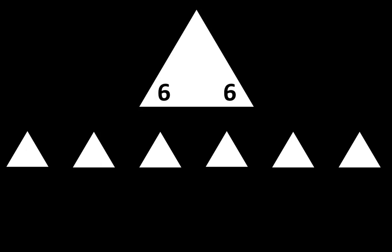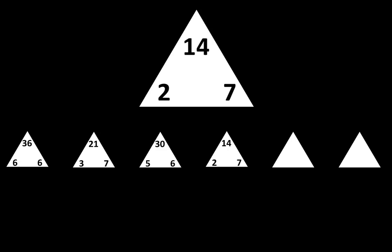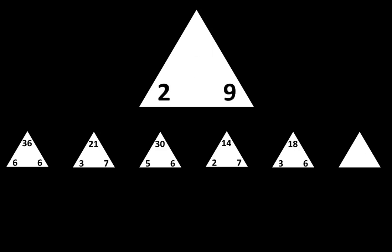Let's move to the next row. The next one is 6 times 6 is equal to 36. The next one is 3 times 7 is equal to 21. The next one is 5 times 6 is equal to 30. The next one is 2 times 7 is equal to 14. The next one is 3 times 6 is equal to 18. The next one is 2 times 9 is equal to 18.